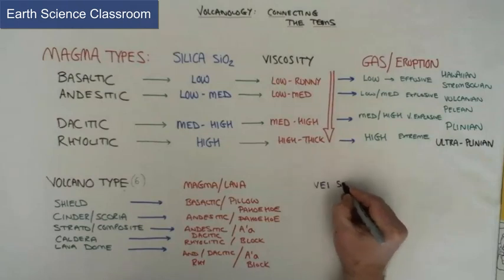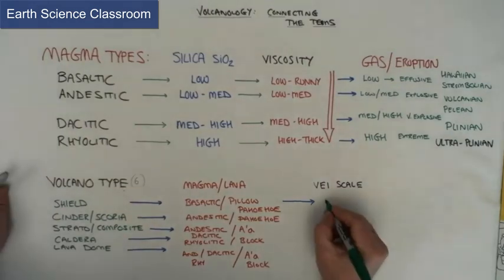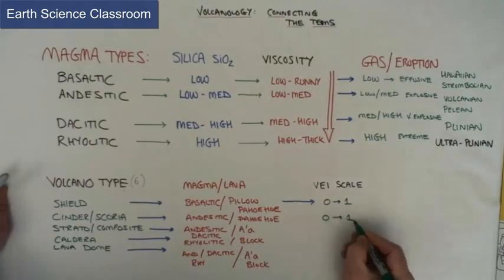And finally the calderas which are the very large ones which is very thick, viscous magma which is going to be blocky lava and dacitic and rhyolitic magma. Then we've got lava domes which is basically the hardened magma again, looking at a'a and blocky.